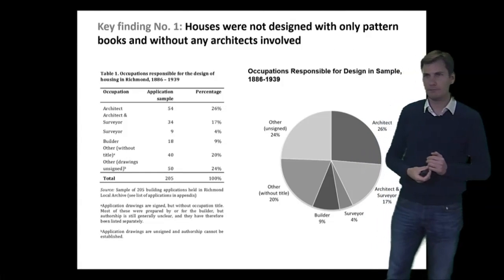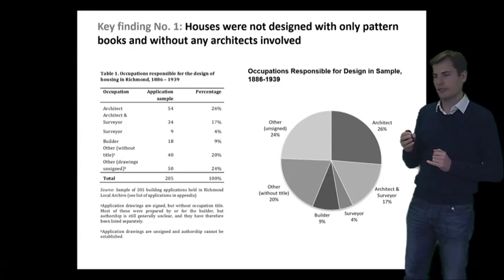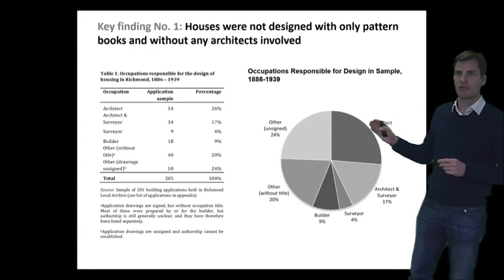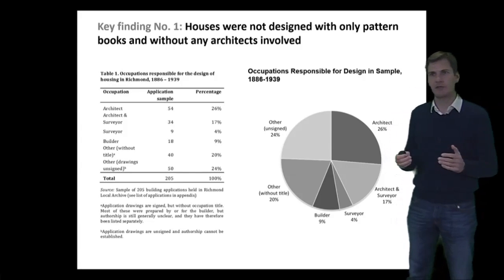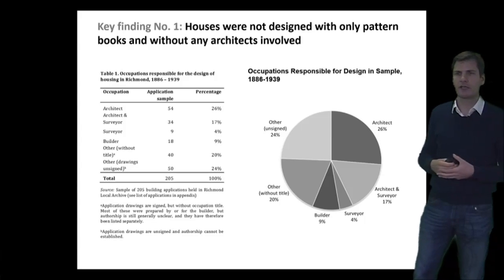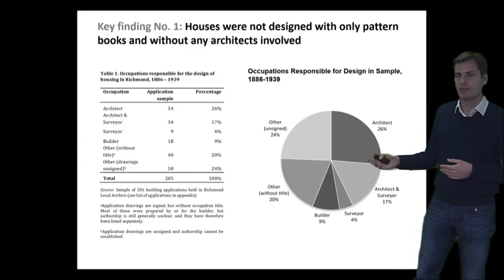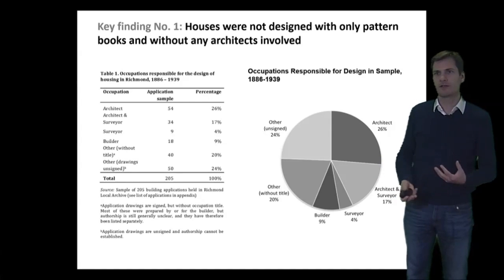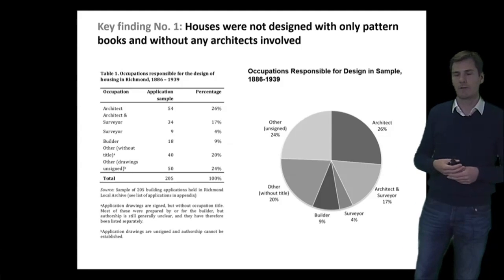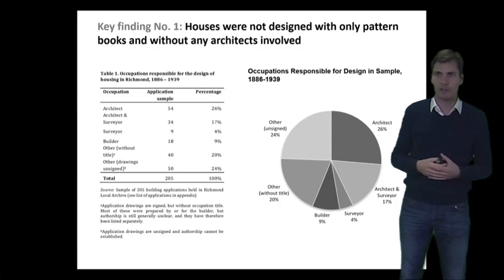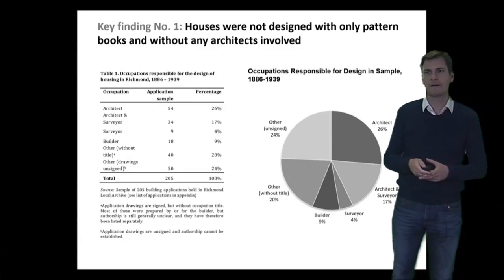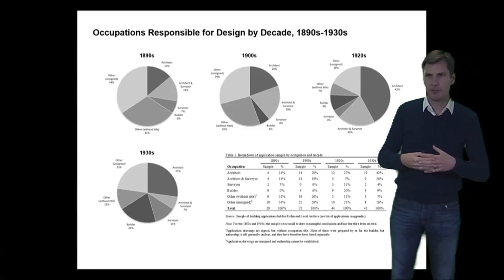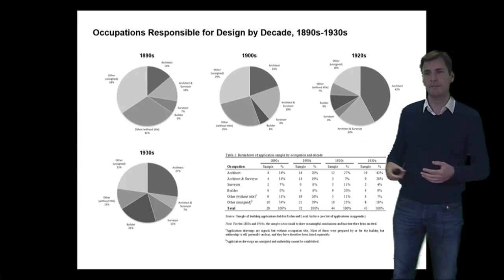I did some quantitative research where I took a sample of about 200 building applications and looked at who were the people who submitted them. I found that a significant portion were architects — so the claim that there were no architects involved didn't hold up. But you could also see that quite a few were architects and surveyors, or came from other backgrounds — builders, surveyors, engineers, and so on. It tells you a lot about how the profession worked at the time: it just wasn't as specialized, with a lot of overlapping occupations. You could see that the proportion of people using the title 'architect' increased over time.